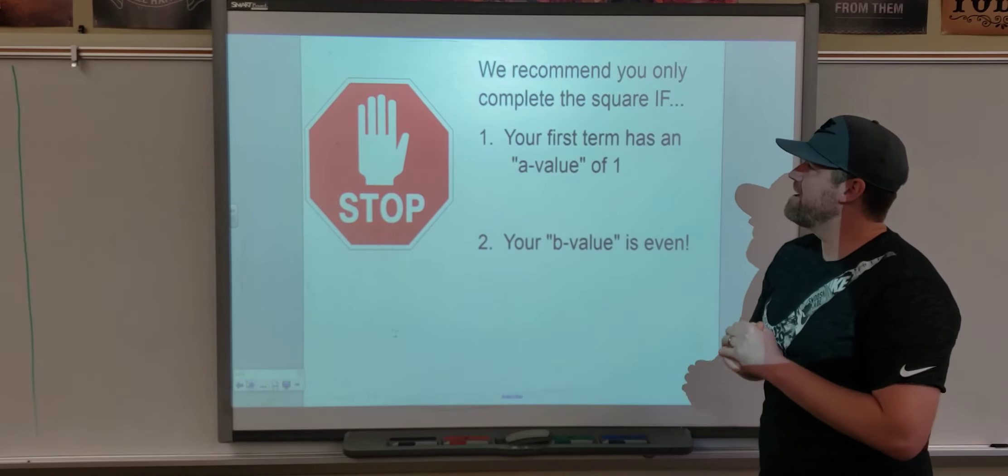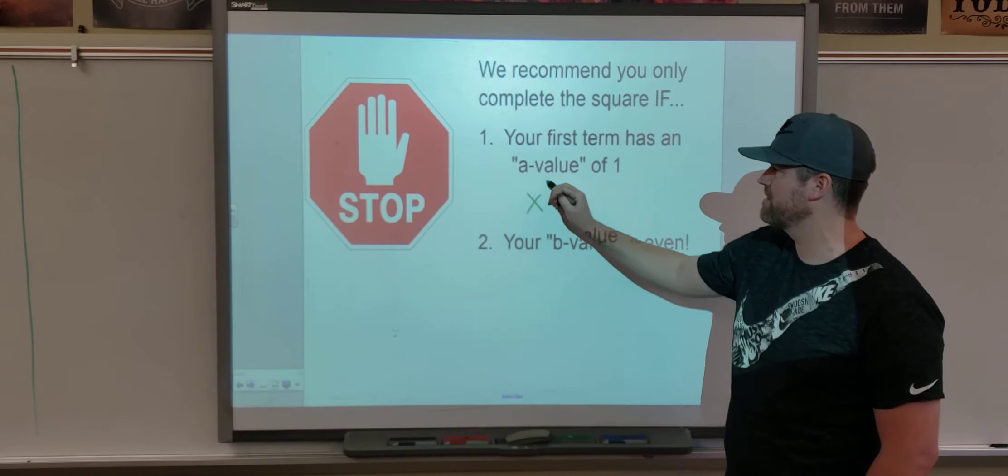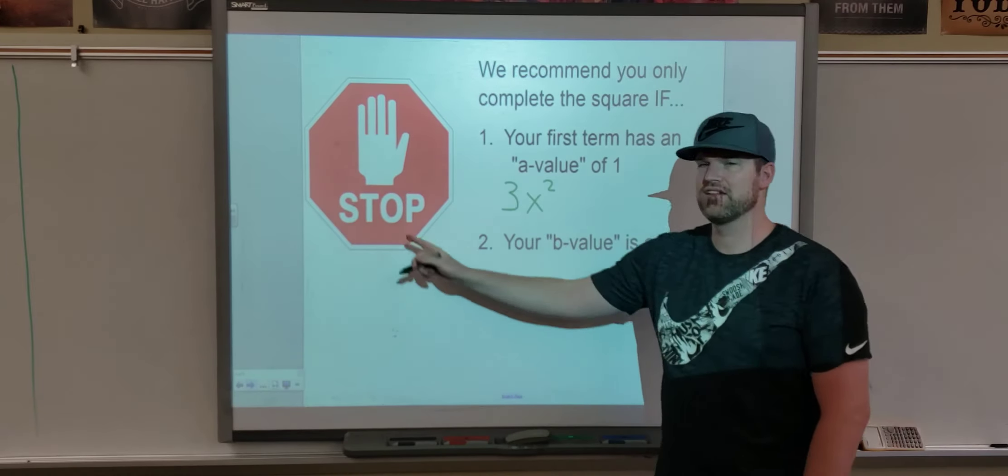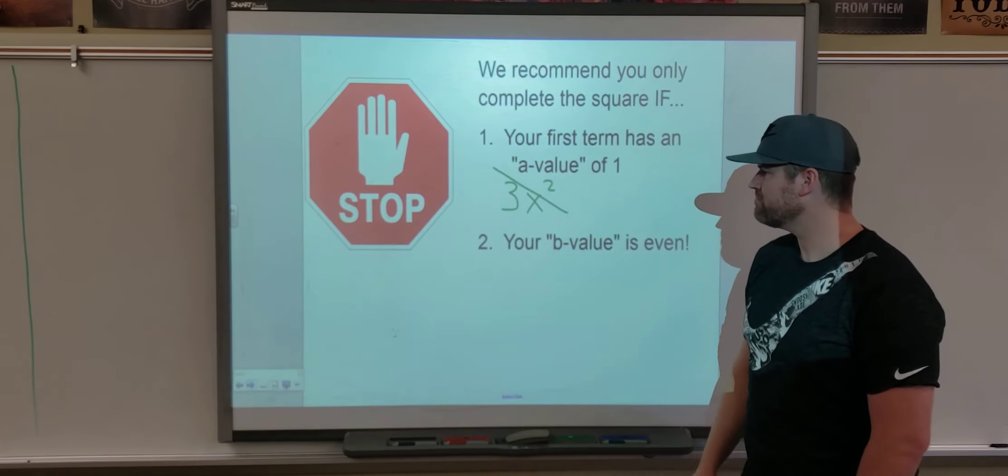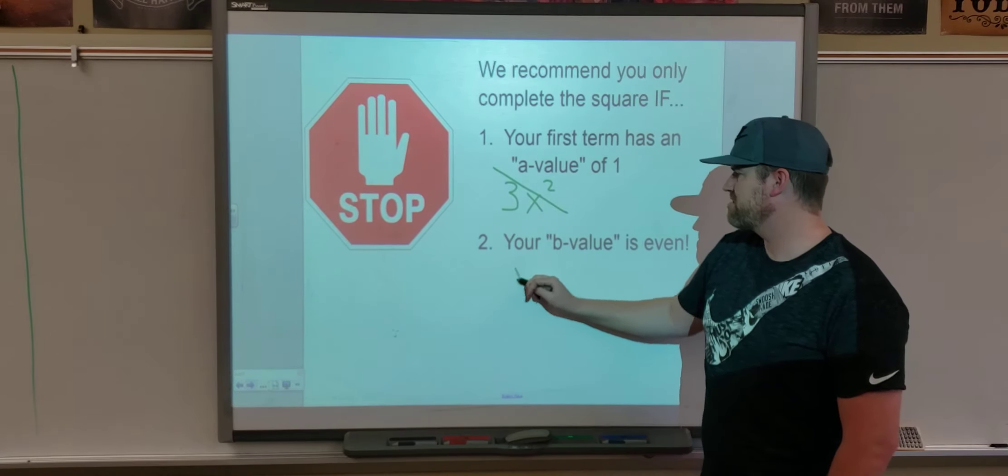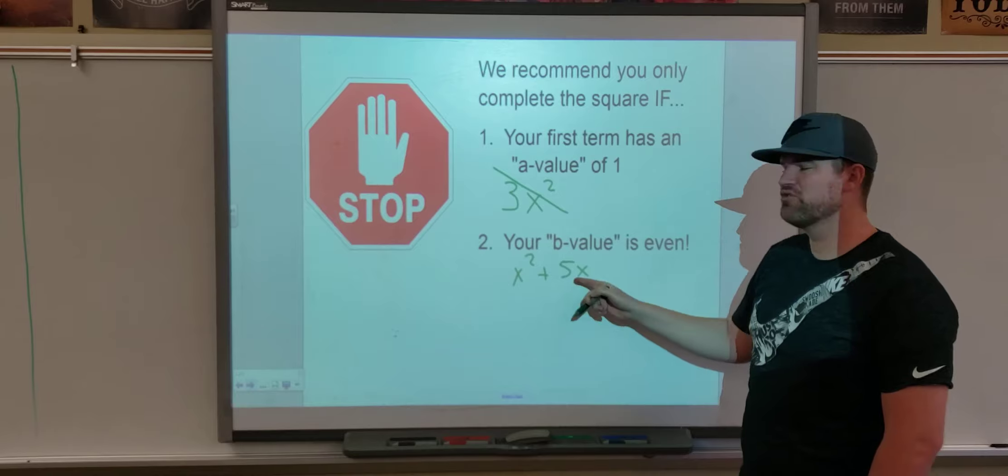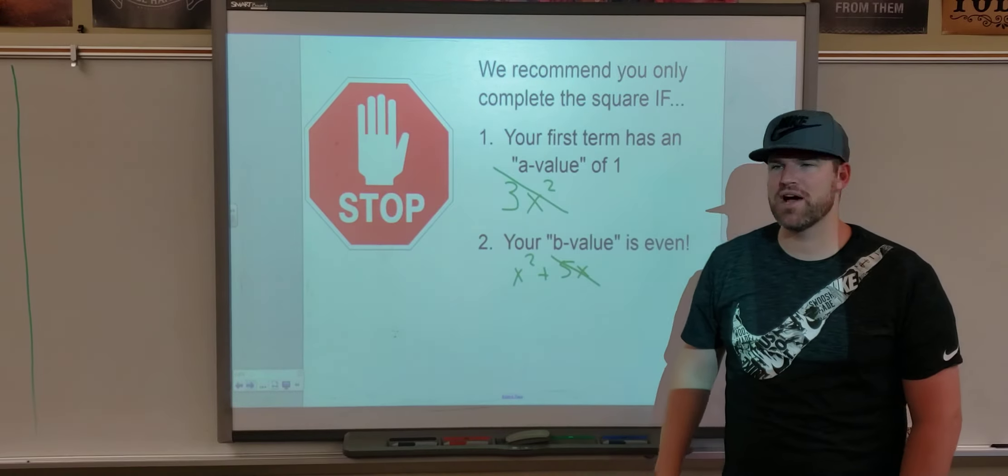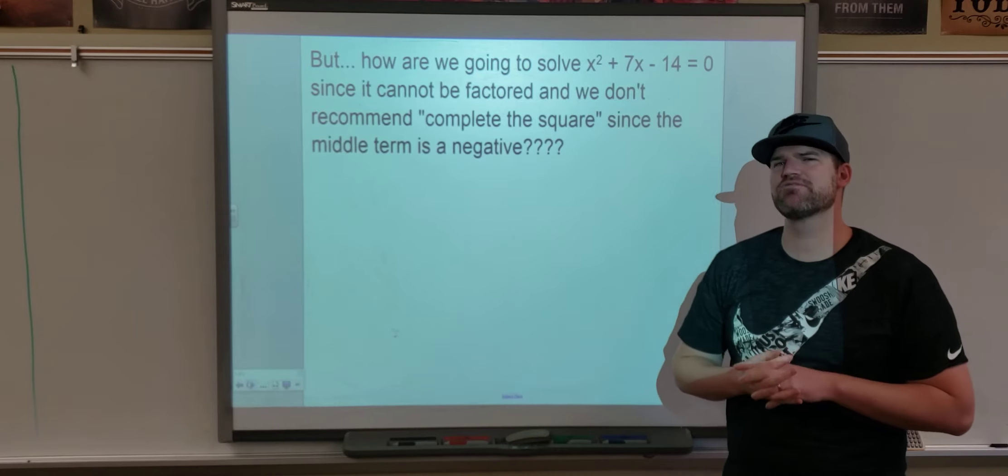We recommend you complete the square, if, only if your first term has a value of 1. So, if it starts off with x squared, that's good. Okay? If it's something else, if it's, like, 3x squared, stop right now. Don't do the rest of the problem. It's going to be tricky. We don't want that. Or, if your b value is even. So, if you're doing a problem, and it's x squared, which is good, right? 1, 1x squared. But then you get plus 5x. As soon as you see that your b value is not even, stop. We're going to find a different way.